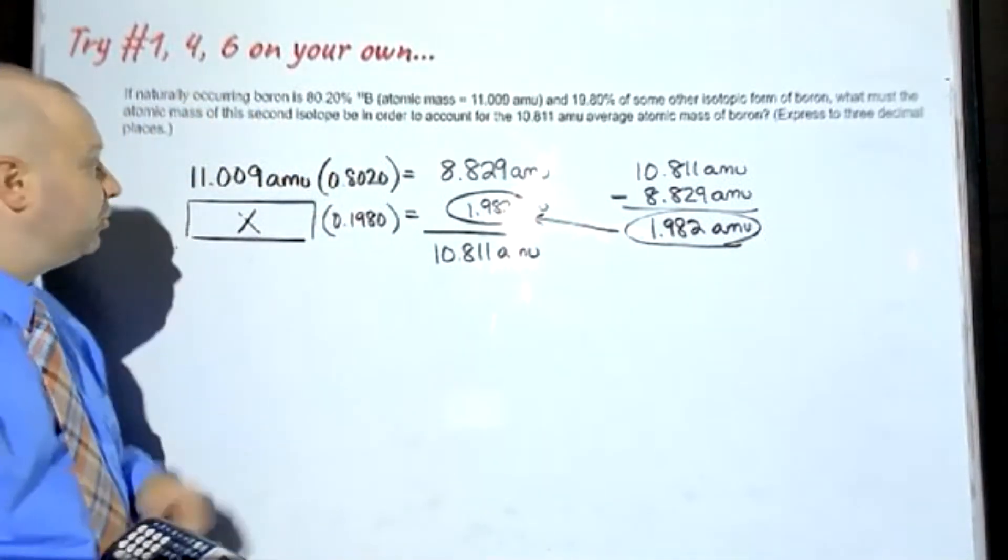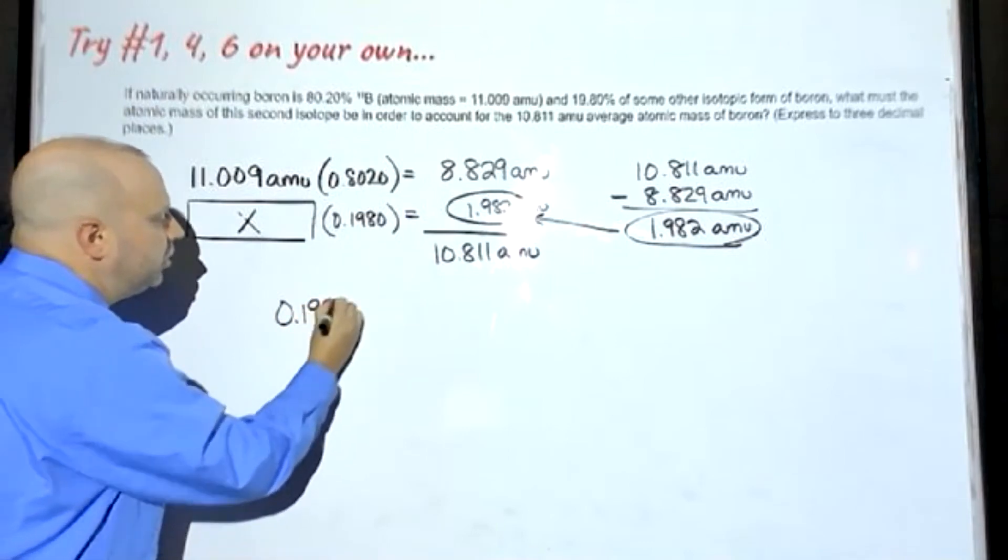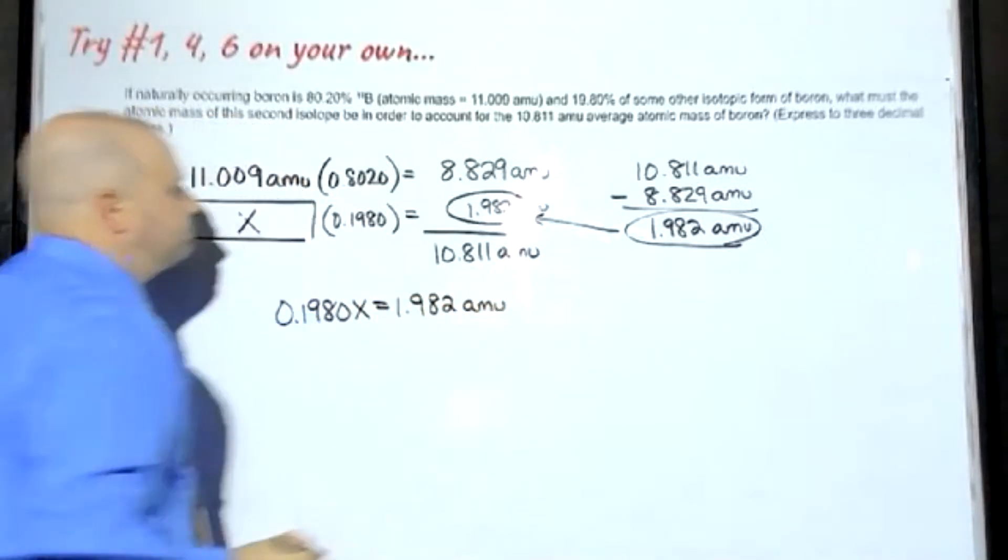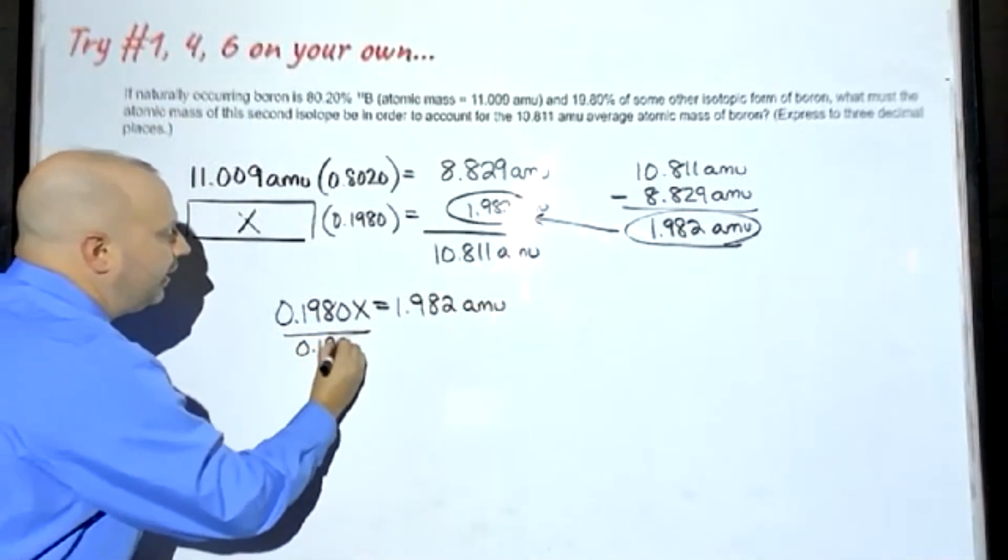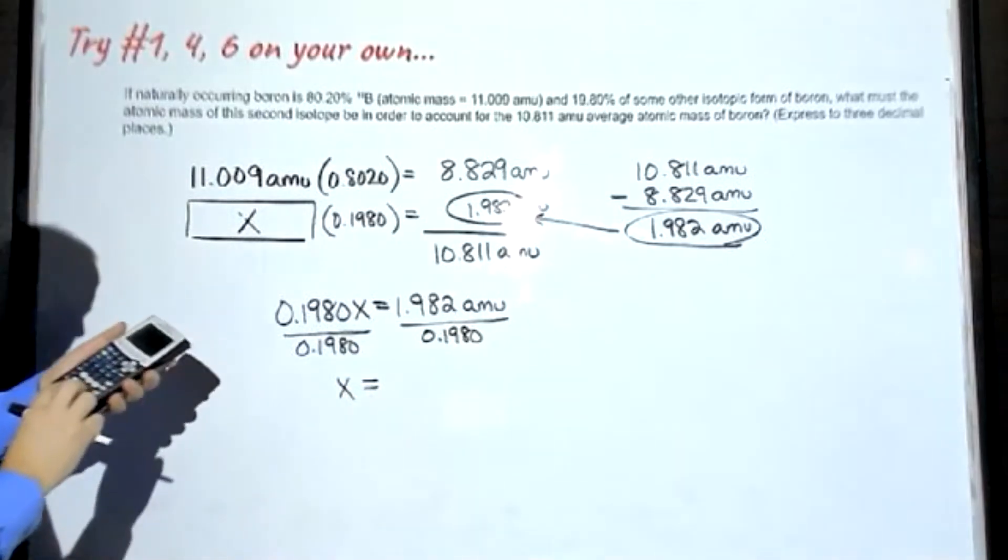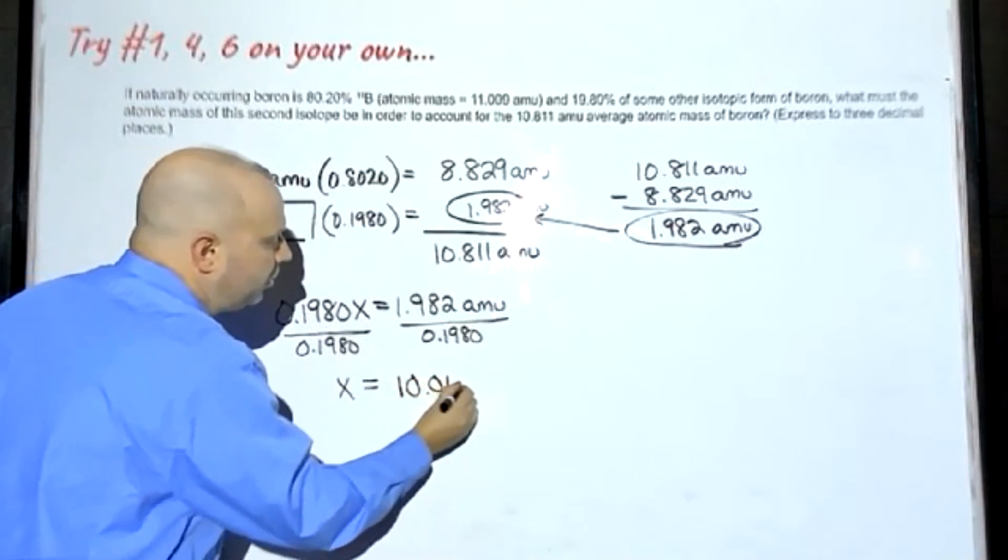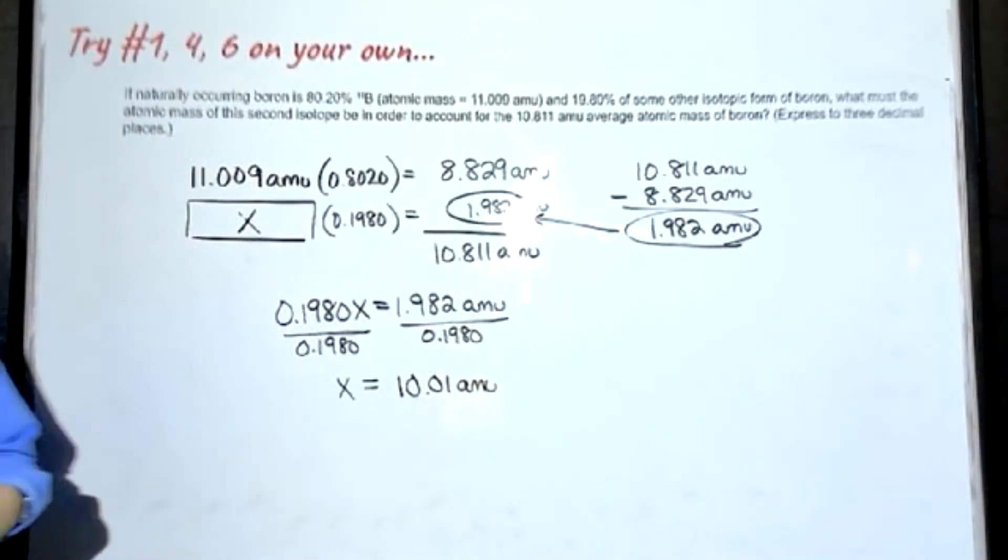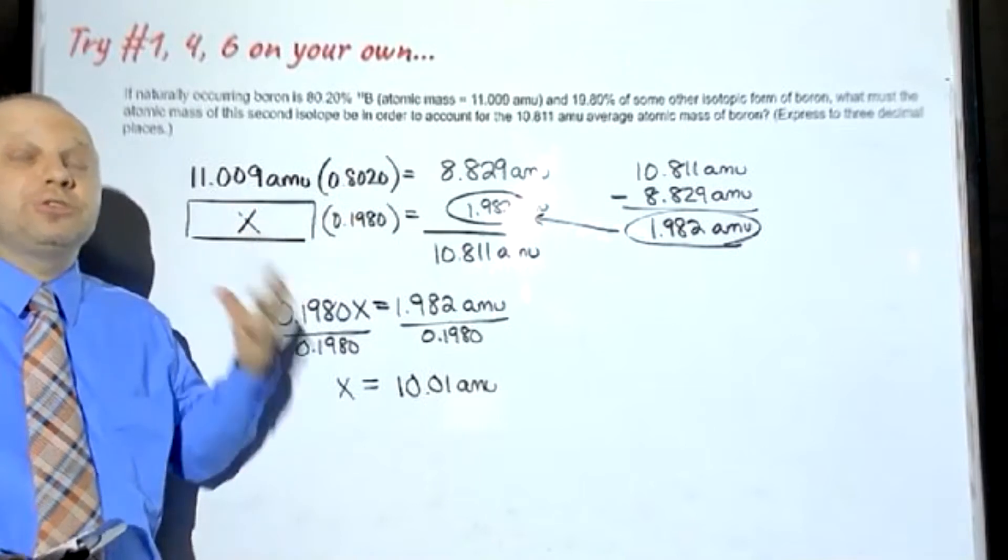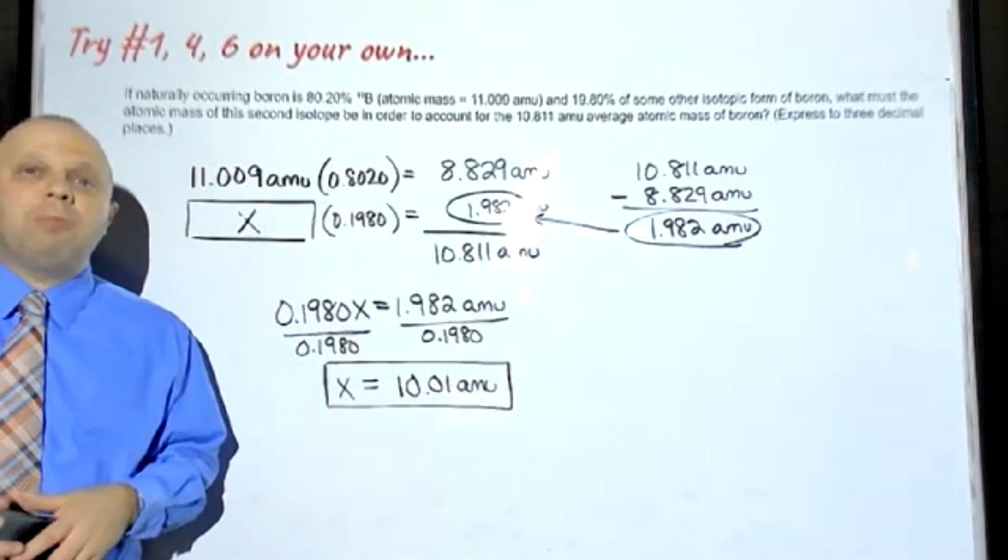Now the problem is fairly simple. X times this number turns out to be 1.982. So I'm going to set up that problem. So 0.1980X equals 1.982 AMU. Divide both sides by 0.1980. X turns out to be 10.01 AMU. This time we do keep the unit of AMU because we weren't solving for a percentage. We were solving for one of our masses. That completes problem number 4.